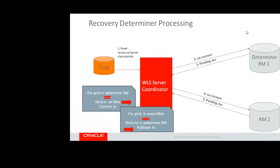At this point, the transaction manager will look into the transaction ID of each pending transaction. In the branch qualifier of the transaction, there is a bit that indicates what resource is the determiner for that particular transaction. It will then make a comparison. If the transaction is pending on the determiner resource as well as all resources, prepare has succeeded in every resource and the transaction will be recovered with a commit. If the transaction is pending on some resources but not on the determiner, the recovery will be a rollback.